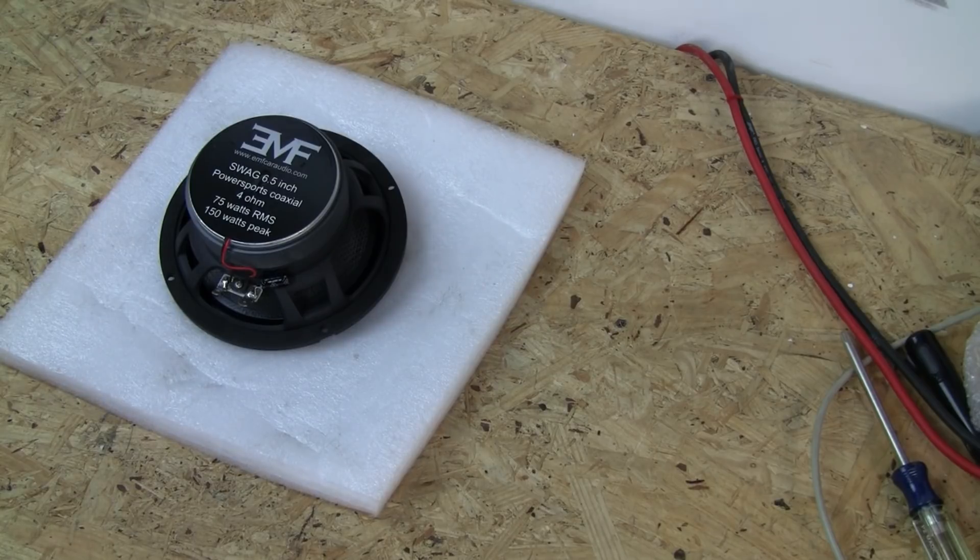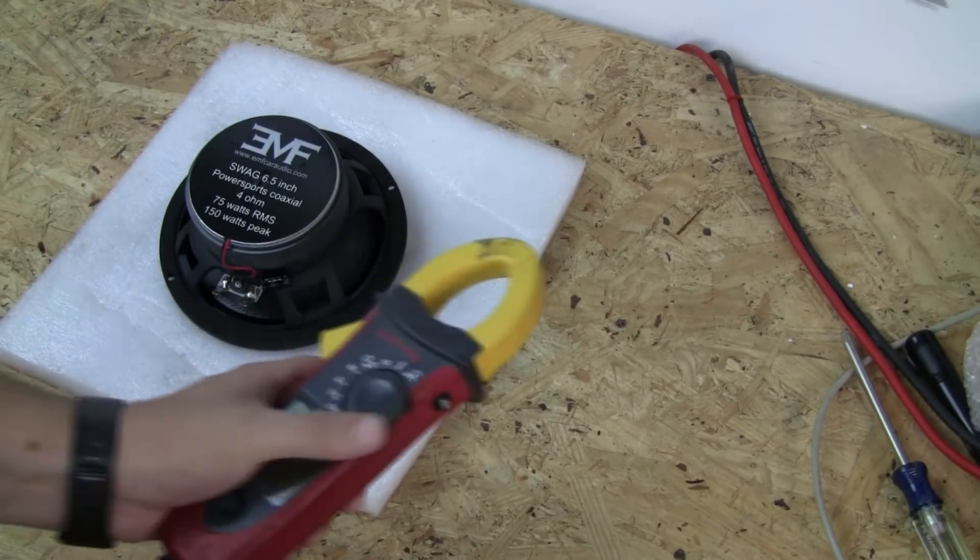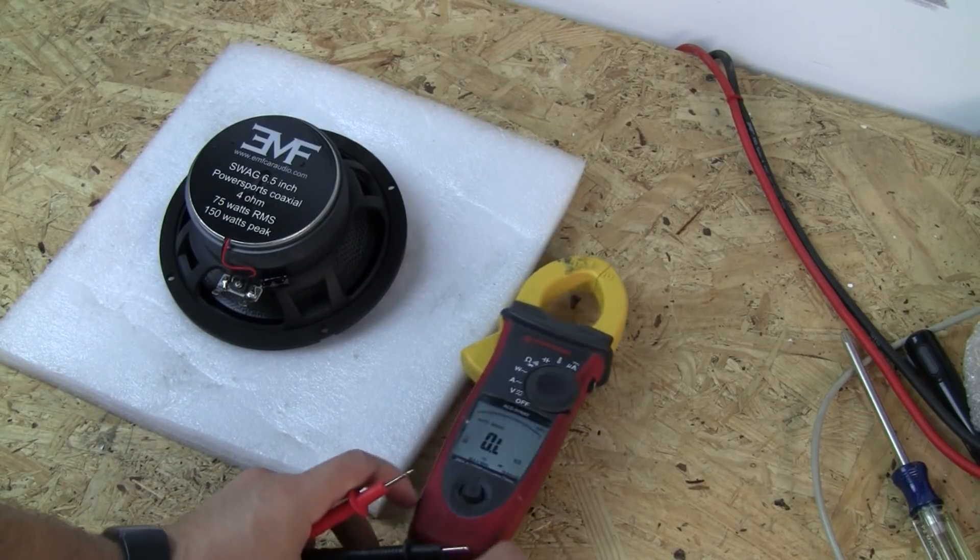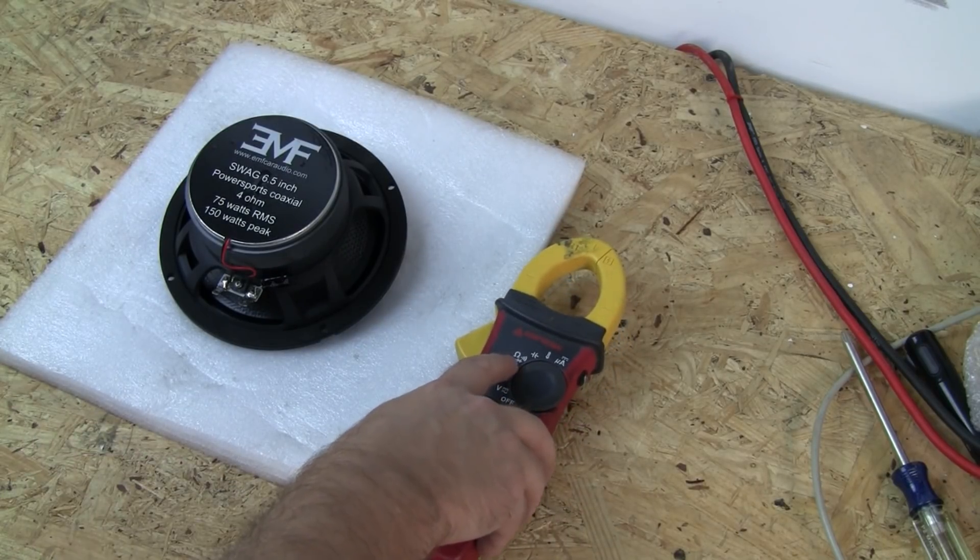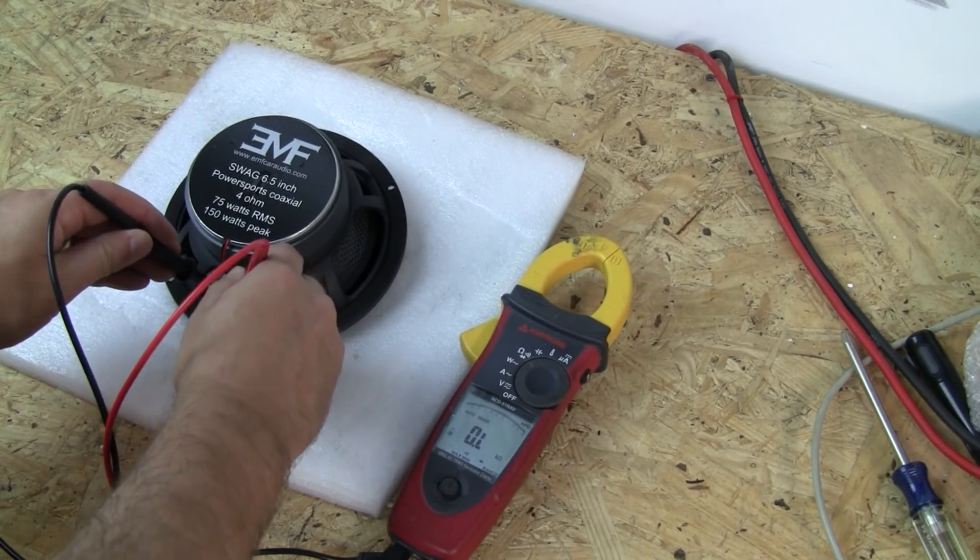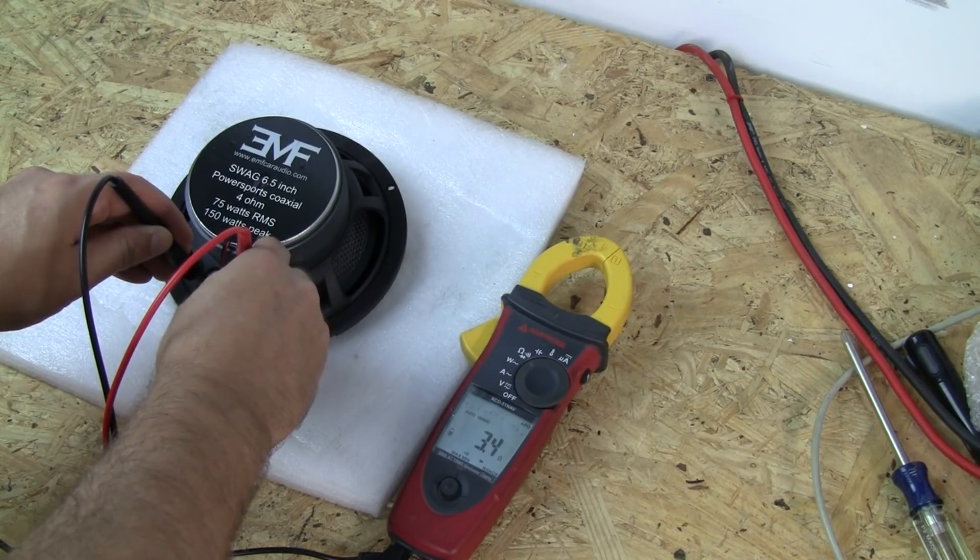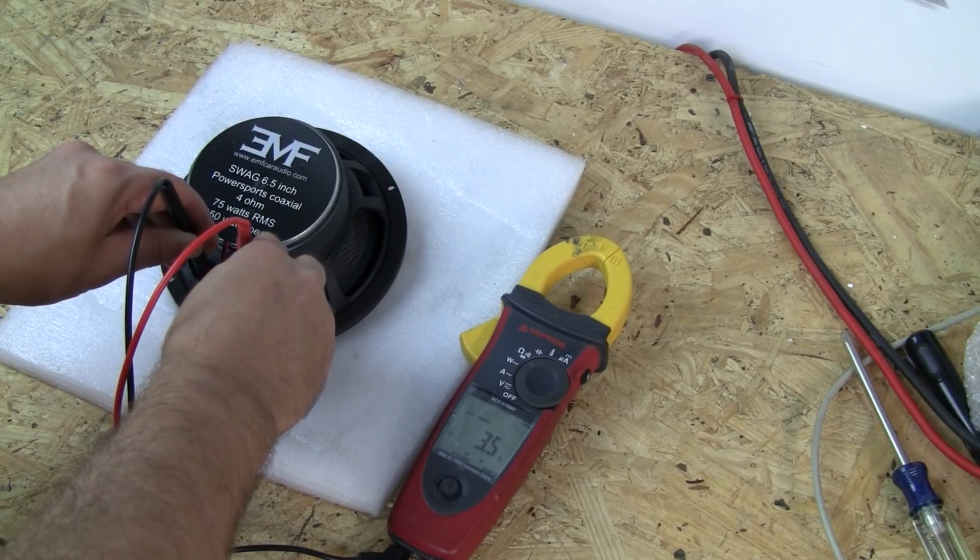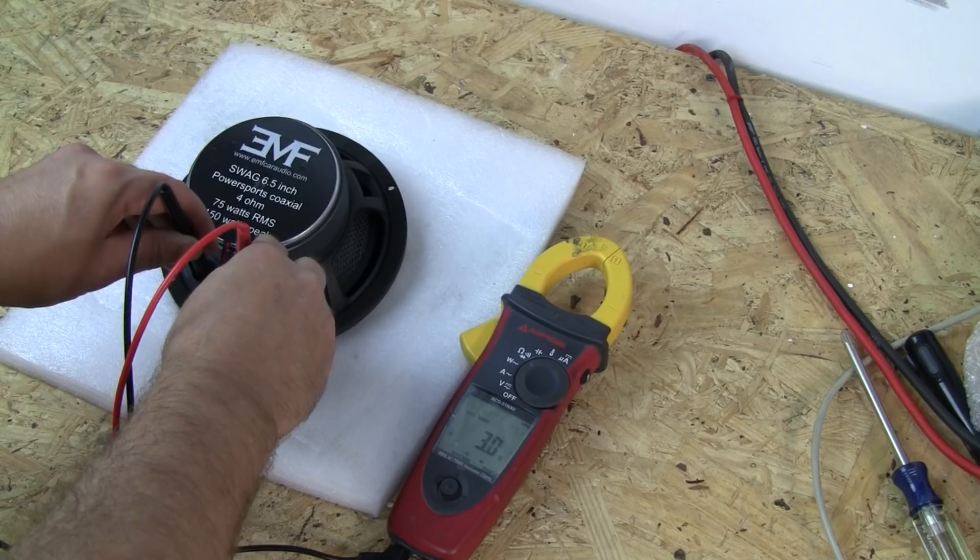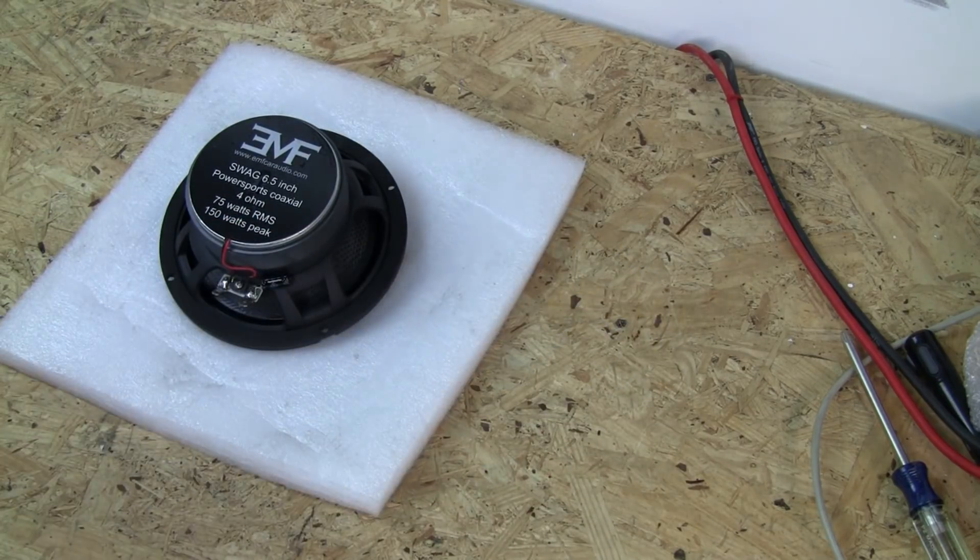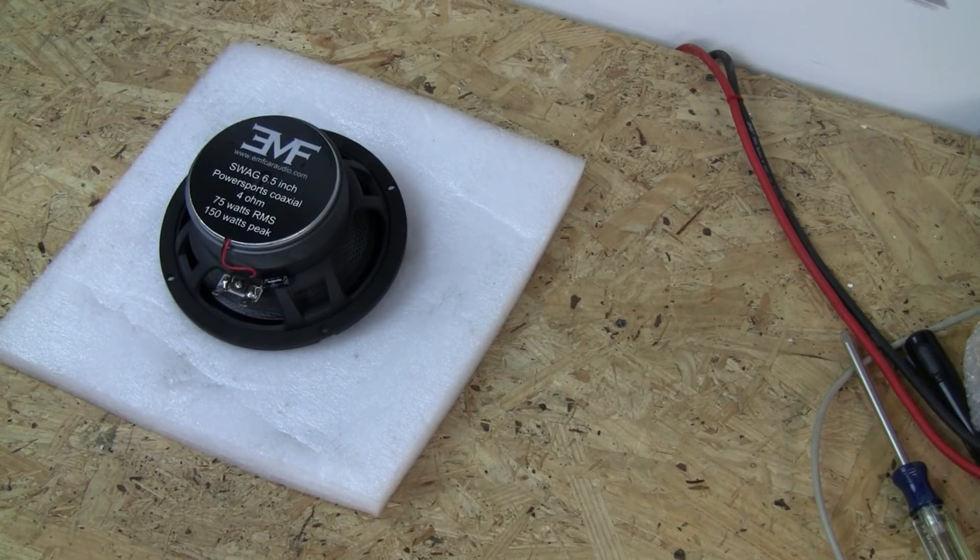Next we'll have the Amprobe. Impedance is going to be the ohm symbol, omega right there. This one is reading, give it a connection, 3.4. If I move it around a little bit I'll get it a little bit more. But we're at 3.3, 3.4, the same as the Fluke.